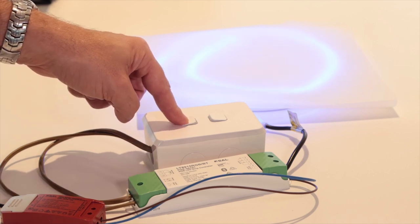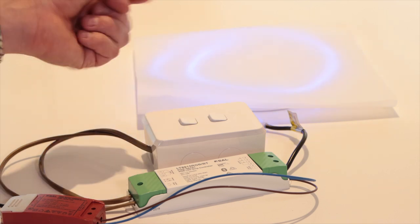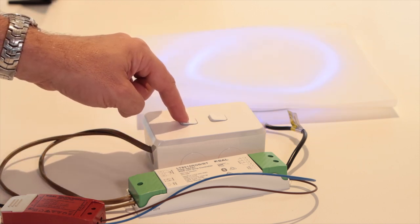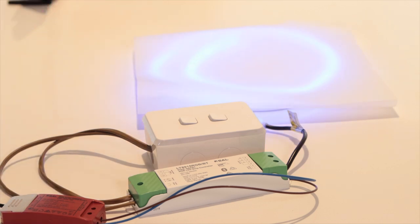I can also then of course dim those levels. I can turn it off at a level, I can turn it on at a level and it remembers where it was at, and I can double tap for maximum output.